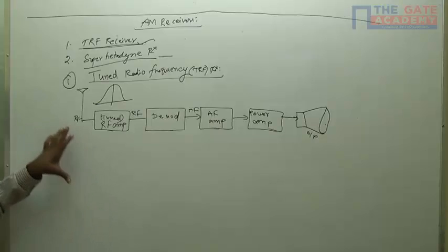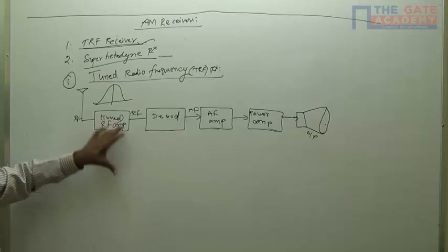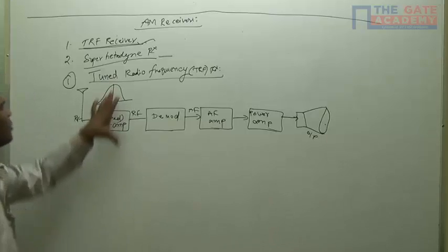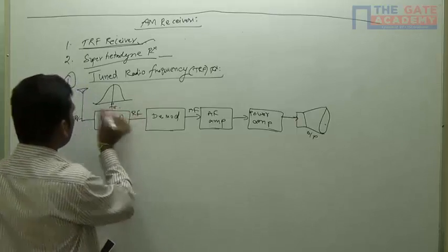This is amplifier. Why? It travels so much distance and it came to here, so this will become a weak signal. This is going to be amplified by using RF amplifier. This RF amplifier circuit we are constructing by using a tuned circuit. This is tuned with that frequency - RF amplifier.